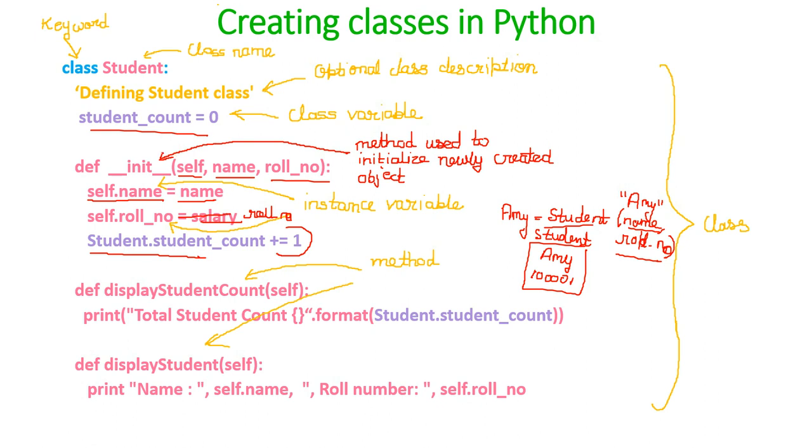I have also defined two more functions, two more methods over here. Display student count, which will simply display the variables value, student count. And the next one is display student, which is displaying the name and role number for which this method is called. Suppose I am writing Amy dot display student, it will simply print name and roll number of it.